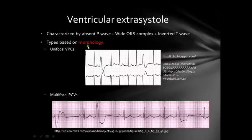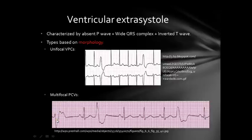We can also classify ventricular extrasystoles based on morphology into unifocal premature ventricular contractions and multifocal — the same definition as the atrial one, but originating from the ventricles. In multifocal ventricular extrasystoles, different morphologies are present: you can see this QRS complex looks different from this extrasystole, which looks different from this other extrasystole — different morphologies of the ventricular extrasystole.